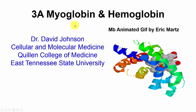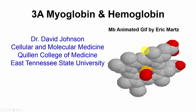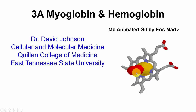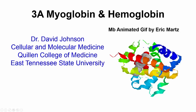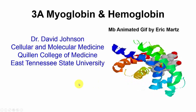This is my first video on myoglobin and hemoglobin. This is an animated GIF by Eric Martz showing the heme with the iron in yellow and the oxygen in red, illustrating the structure of the heme molecule and how it fits into the 3D structure of myoglobin — the same holds for the subunits of hemoglobin.